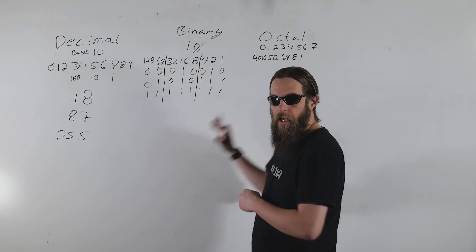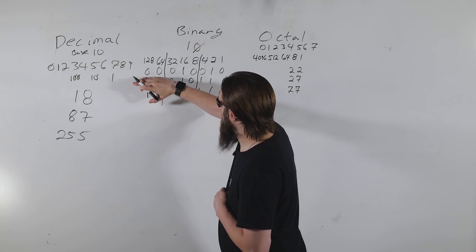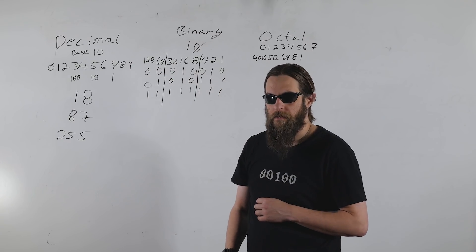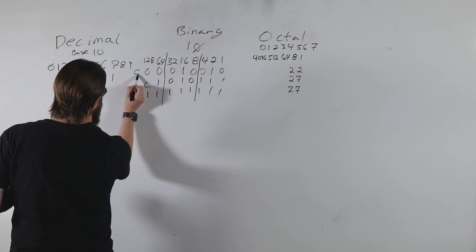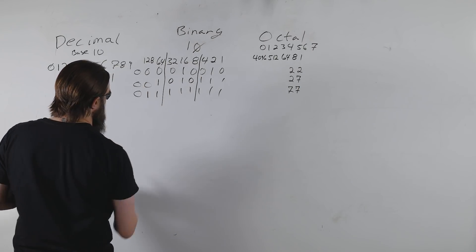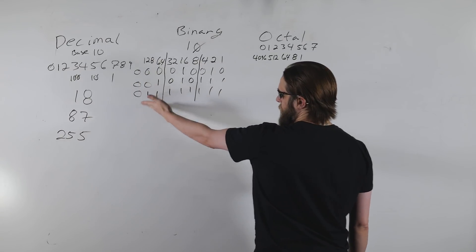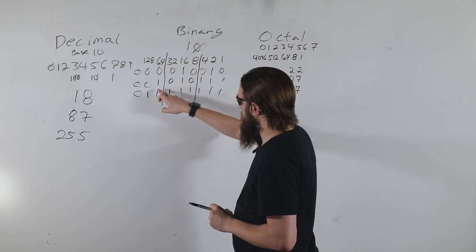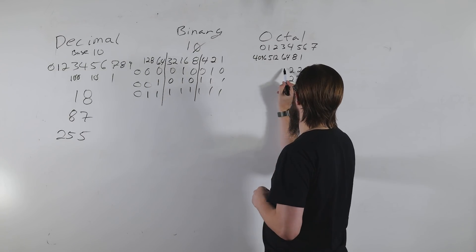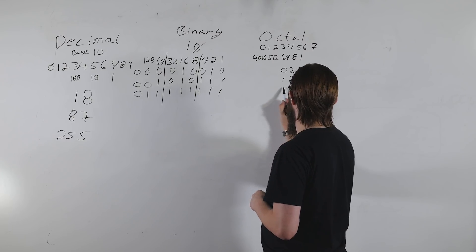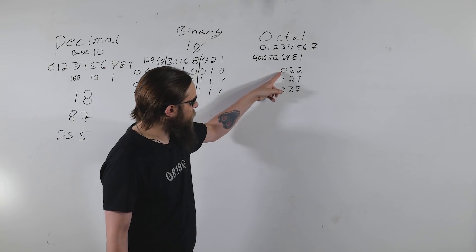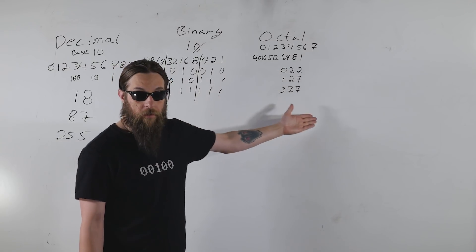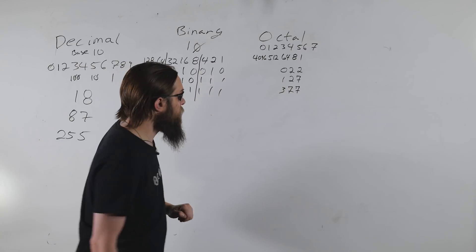For the remaining bits — there are only two, not three — we just pad a zero to the front; it doesn't change the number. That gives us 0, 1, and 3. So 18 in octal is 022, 87 is 127, and 255 is 377. That's how they're represented in octal.